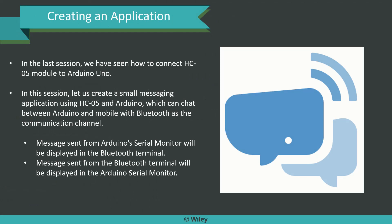In the last session we saw how to connect the HC05 module to Arduino Uno. In this session, let us create a small messaging application using HC05 and Arduino which can chat between the Arduino and a mobile phone through Bluetooth as the communication channel. We are building a messaging service that uses Bluetooth as the underlying technology. The message sent from the Arduino Serial Monitor will be displayed in the Bluetooth Terminal on the mobile, and the message sent from the Bluetooth terminal will be displayed in the Arduino Serial Monitor — making it an exact chat application.